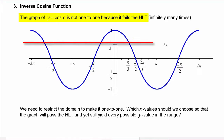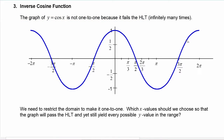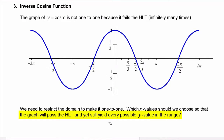If we put a horizontal line through the function, it would hit the graph in infinitely many points. So we will need to restrict the domain to make it one-to-one. The standard is to choose a section of the graph closest to the origin so that the graph will pass the horizontal line test and yet still yield every possible y value in the range.